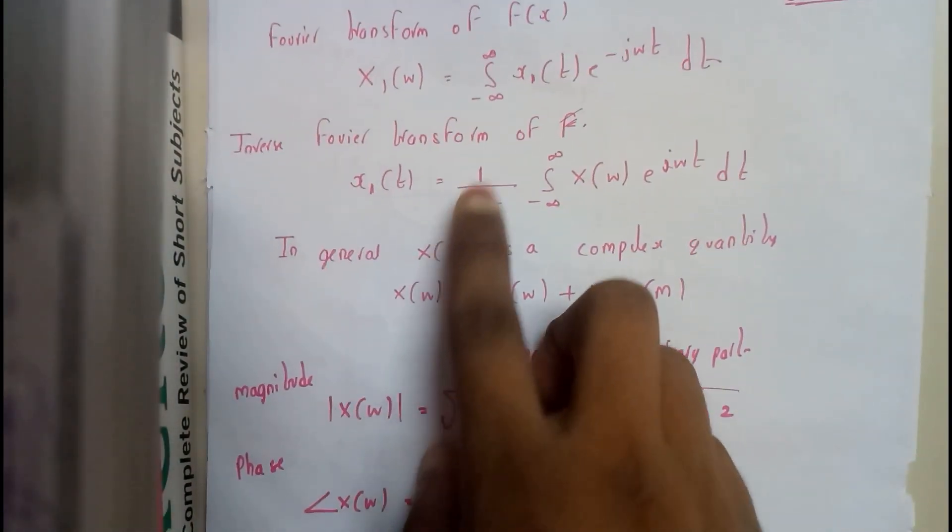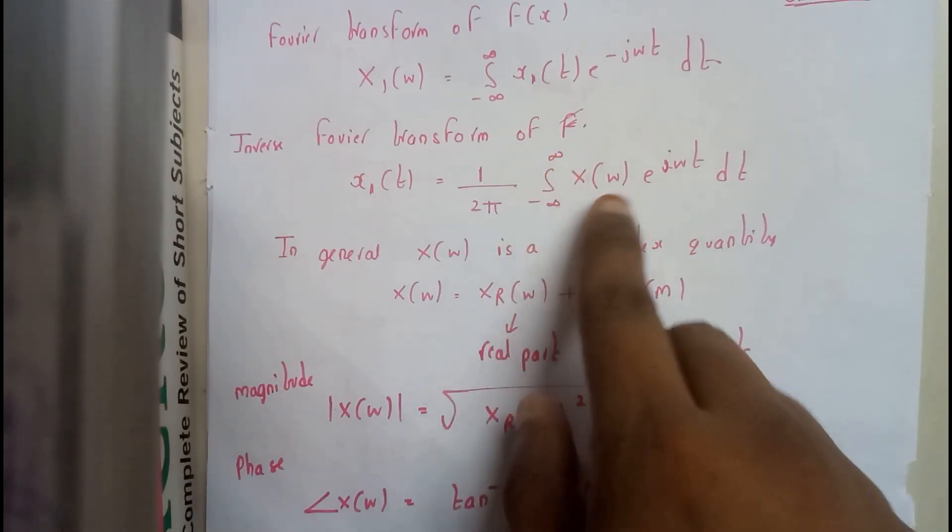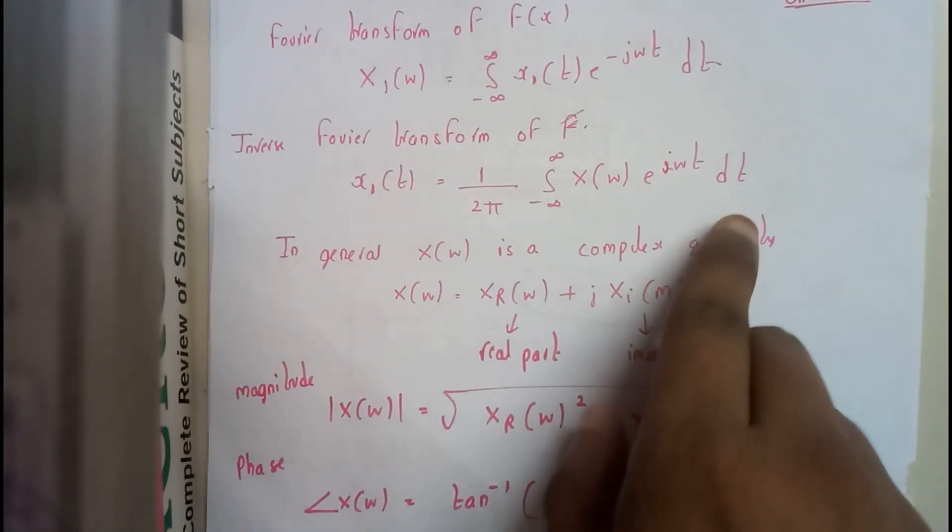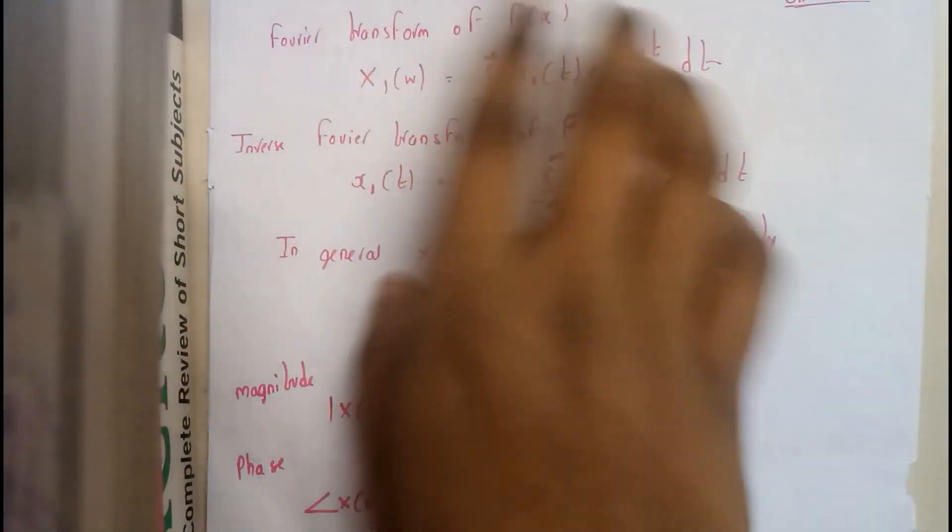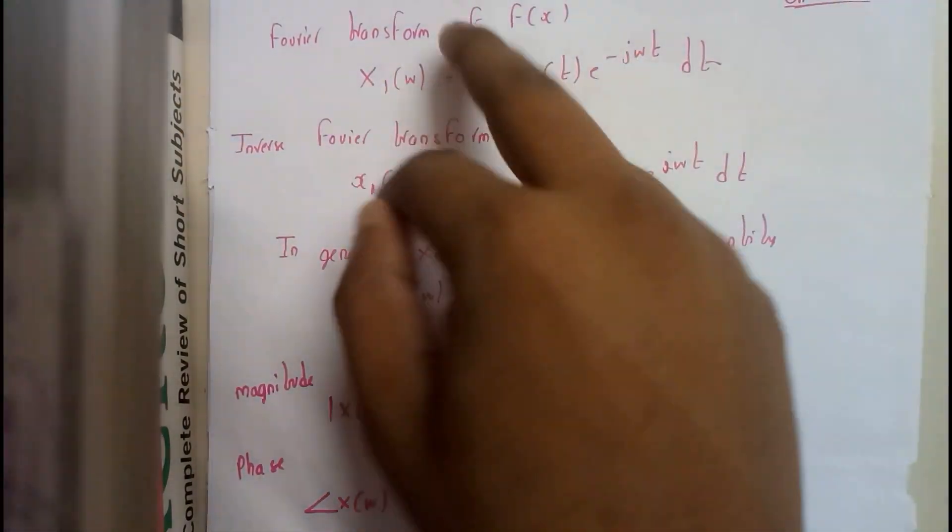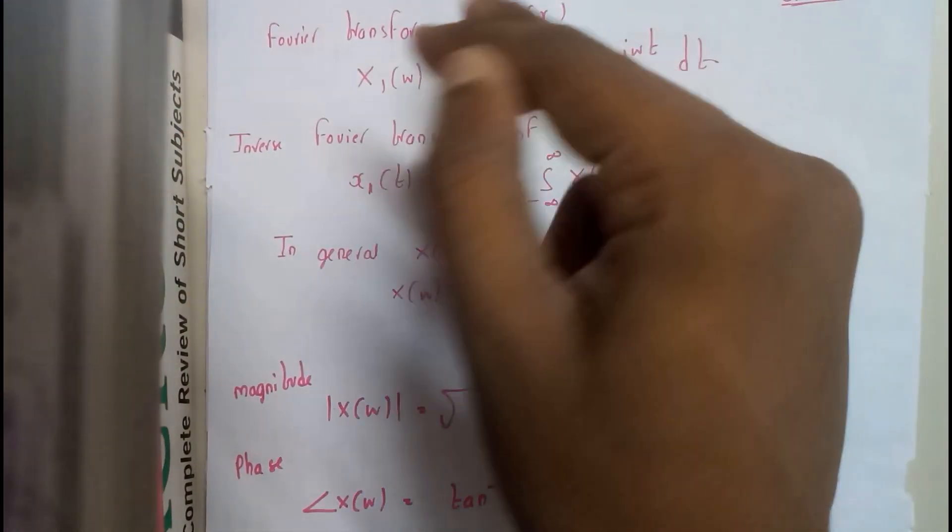Inverse Fourier transform is x1(t) equals 1 by 2π integral minus infinity to infinity x of t e to the power of j omega t dt. So we can expect one problem in between these two guys, Fourier or inverse Fourier.